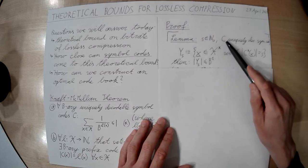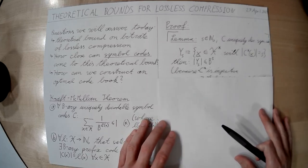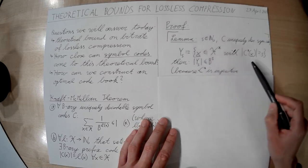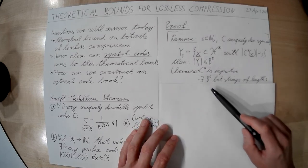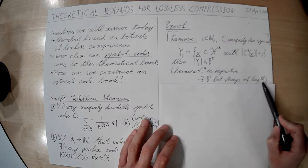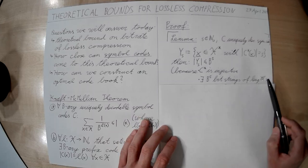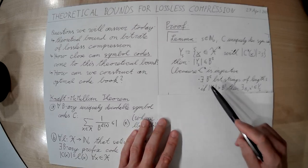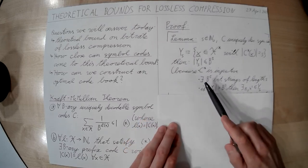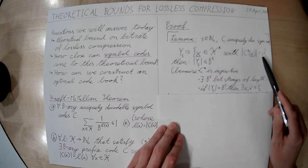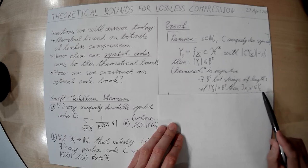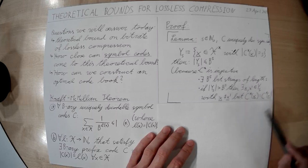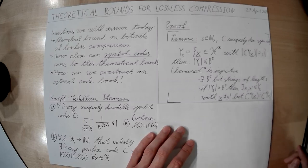The argument is simple: if C is uniquely decodable, then C* is injective — it maps different messages to different codes. But if we're only looking at bit strings of length s, there are only b^s such bit strings. So if there were more than b^s messages whose encoding has length s, two of those different messages must be mapped to the same bit string, and then C would no longer be uniquely decodable.